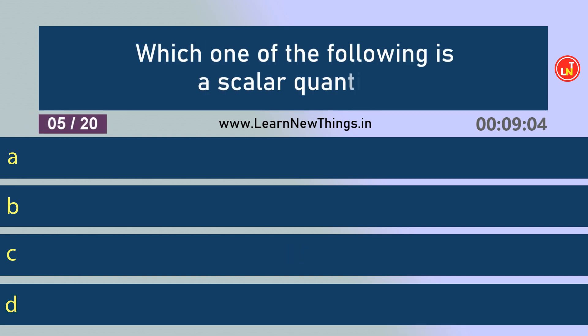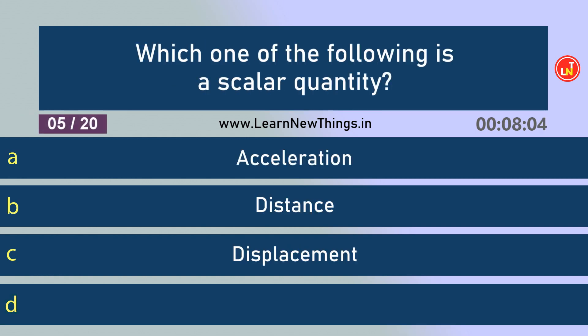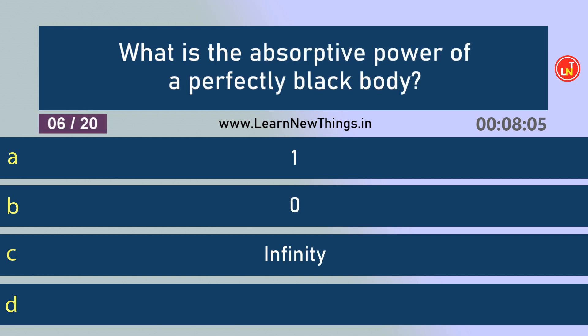Which one of the following is a scalar quantity? Distance. What is the absorptive power of a perfectly black body? 1.